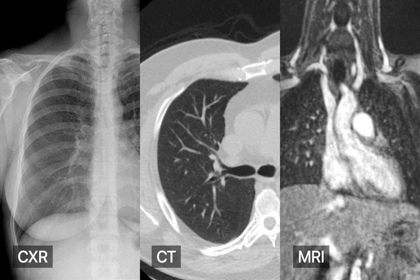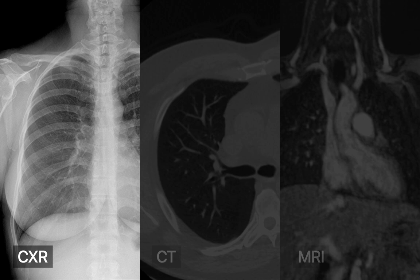When we image the chest, the most common studies we perform are chest x-rays, chest CTs, and chest MRIs. Chest x-rays are fast, inexpensive, widely accessible, and can be done at the patient's bedside when needed. Chest x-ray images also have high spatial resolution. On the downside, chest x-rays are basically a summation shadowgram where three dimensions get collapsed into two, which can sometimes make it difficult to understand what's going on anatomically. We also have to expose patients to ionizing radiation in order to obtain a chest x-ray image.